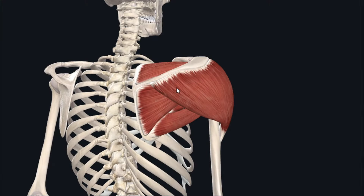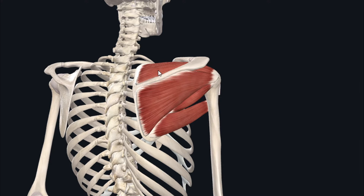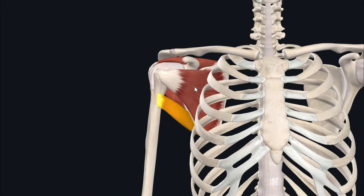There are six muscles of the scapular region, and these muscles connect the scapula to the humerus, so they are associated with movements at the shoulder joint. These muscles are the deltoid, supraspinatus, infraspinatus, teres minor, teres major, and subscapularis.